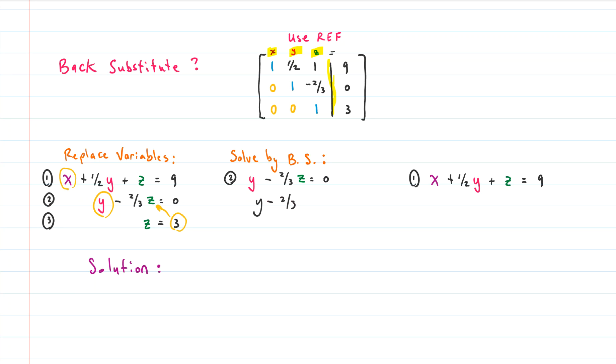So let's do that. Y minus two thirds, instead of Z we're going to put three because that's what Z equals. And the threes cancel, we're left with Y minus two equals zero. We can add two to both sides and we get Y equals two. So we have Z equals three, Y equals two, and we can solve for X. If I copy and paste this because really we're just replacing variables, I can put in a three for Z, I can put in a two for Y.